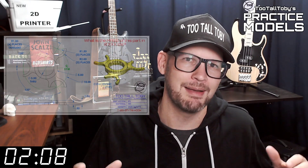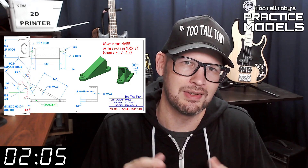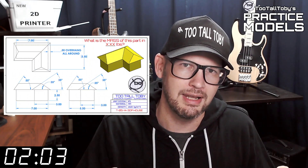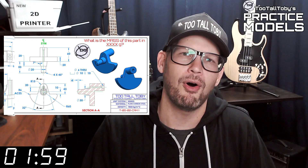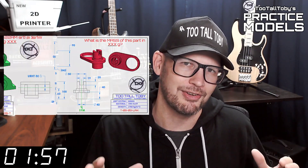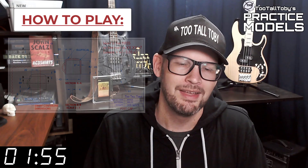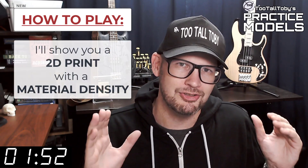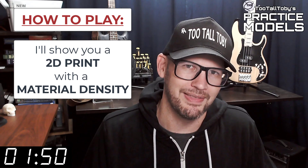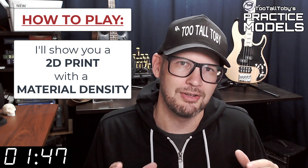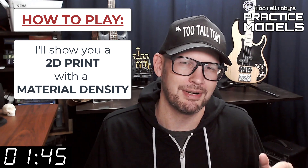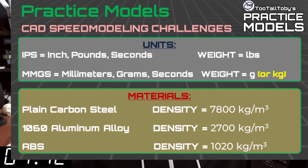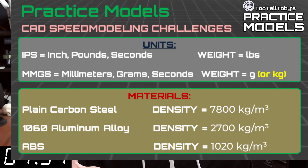If you're here for the first time, welcome. The goal of this video series is to provide you with good quality 2D prints that have all the dimensions and information you need to create a 3D model. On that print you're going to see a material property and a material density — it's going to be one of these three material properties. So take a moment, grab a screen capture of what's on the screen right now, and be sure that your materials in your library match these properties.